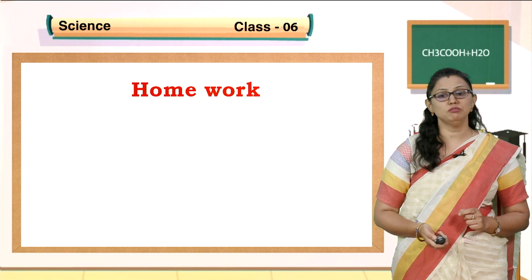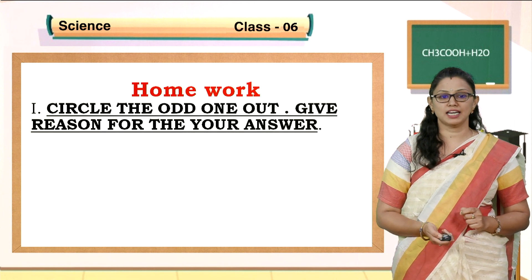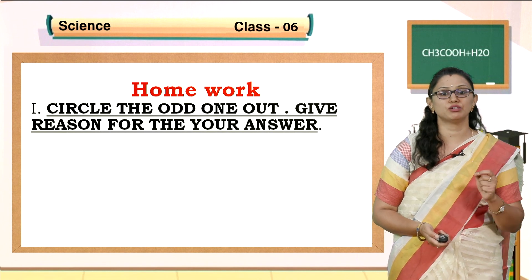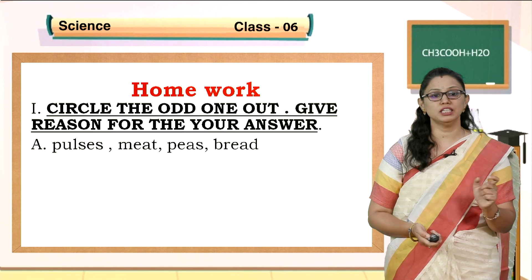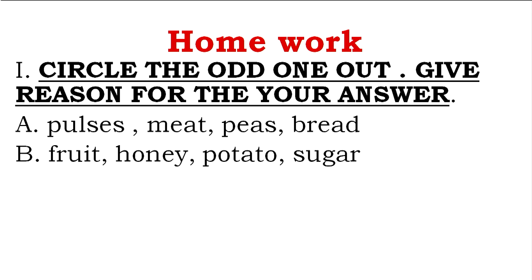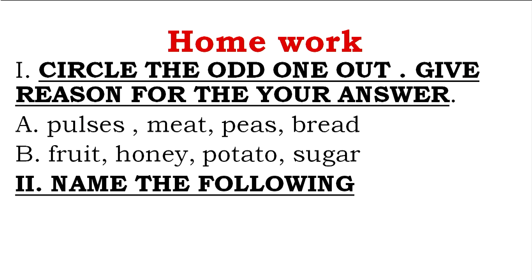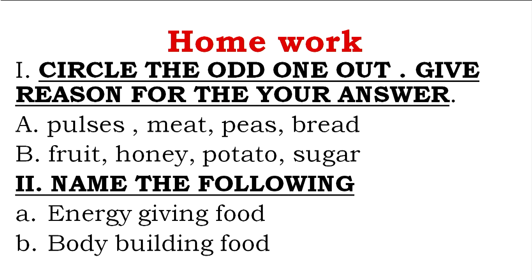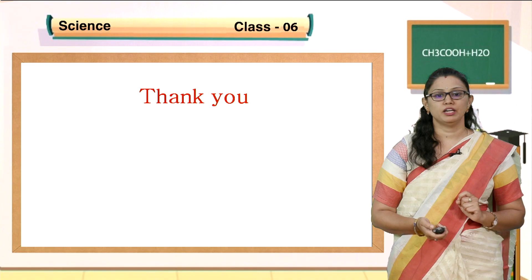Before heading off, I would like to give you some homework. Circle the odd one out and give a reason for your answer. The items are: pulses, meat, peas and bread. The second one is: fruit, honey, potato, sugar. Next, name the following: energy-giving food - name what it is called and its sources; and body-building food.